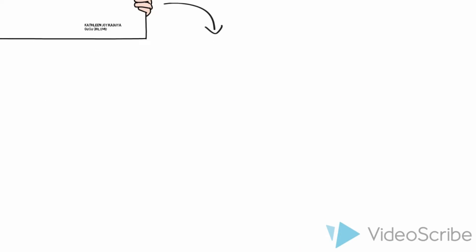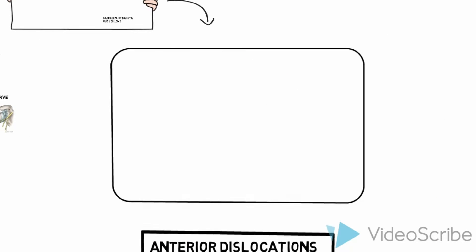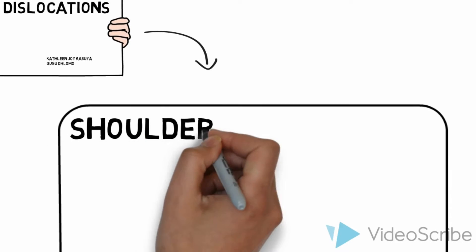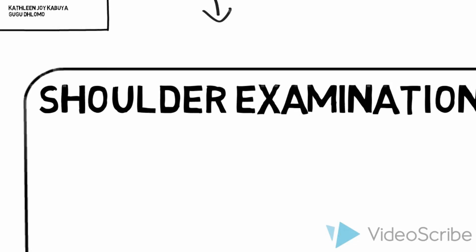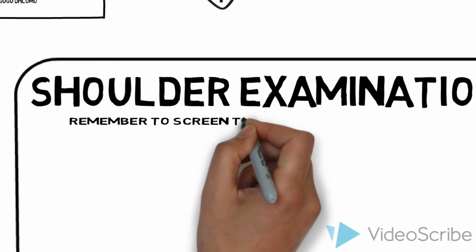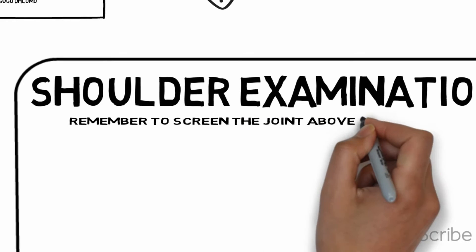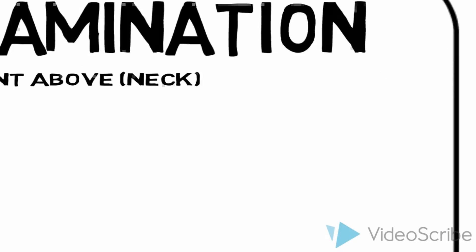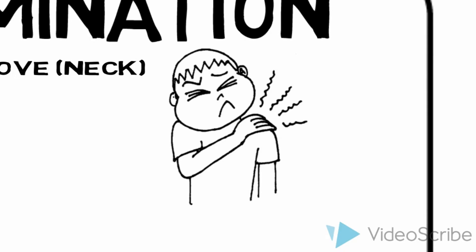We will now be looking at the shoulder examination. As with any joint, it is important to remember to screen the joint above — in this case the neck — and the joint below, the elbow. A general examination should always be done with every patient, as well as a neurovascular assessment of the affected limb as mentioned earlier.